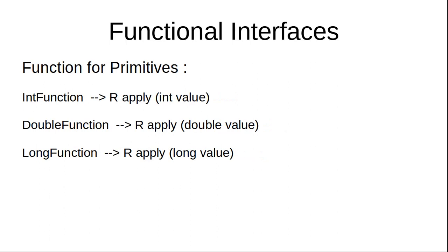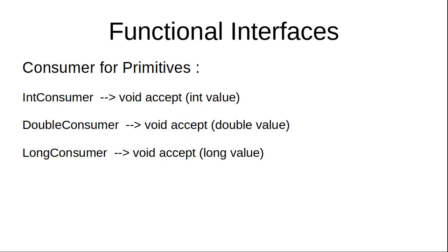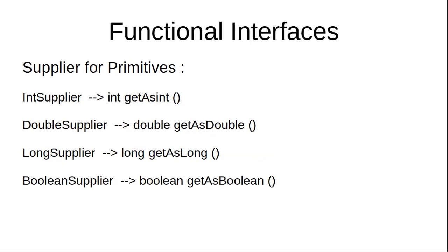Function similarly has three primitive flavors: IntFunction, DoubleFunction, and LongFunction. If you are passing an input of type integer, choose IntFunction instead of normal Function. For double, use DoubleFunction; for long, use LongFunction. Consumer also follows the same pattern: IntConsumer for integer, DoubleConsumer for double, and LongConsumer for long.